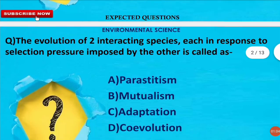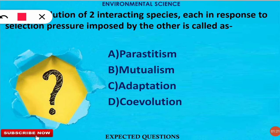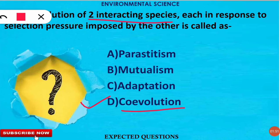The next question is: the evolution of two interacting species, each in response to the selection pressure imposed by the other, is called what? The correct option is option D — co-evolution. Co-evolution is the process in which mutual evolution happens between two interacting species, so both interacting species are evolving together.